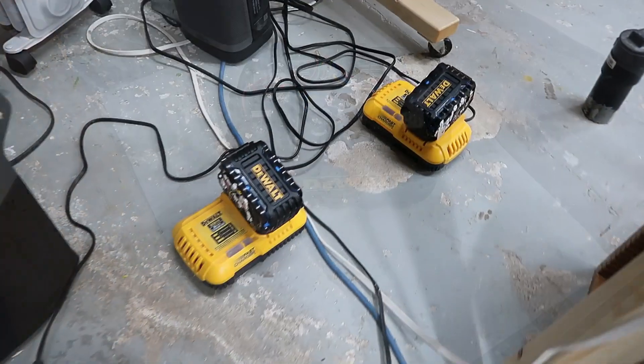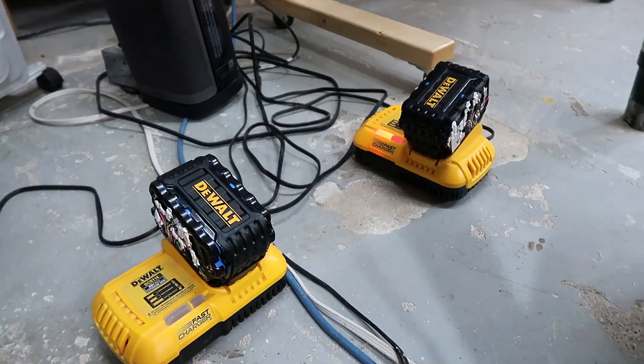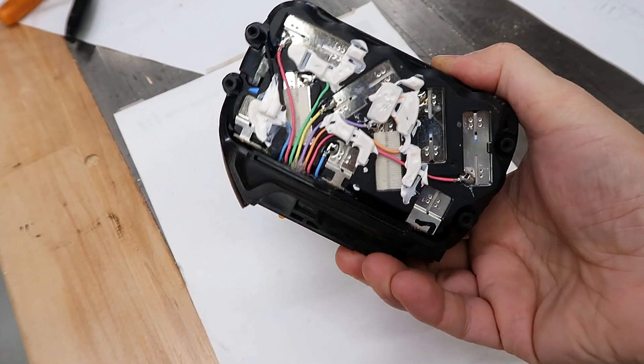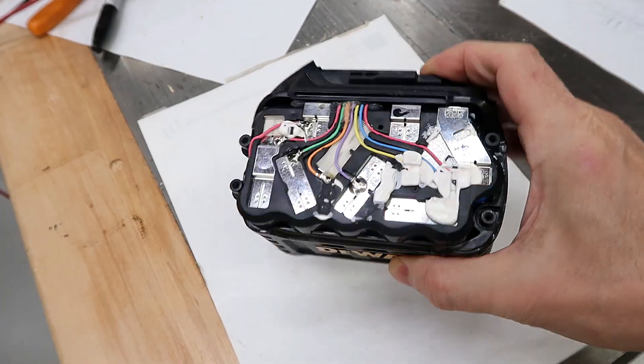And after taking all these measurements, I put both of these battery packs on the charger for a while and then measured all the cells again, and now they're in balance. So indeed, they only balance when they're on the charger.